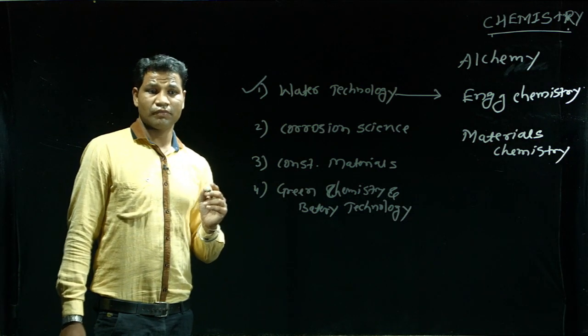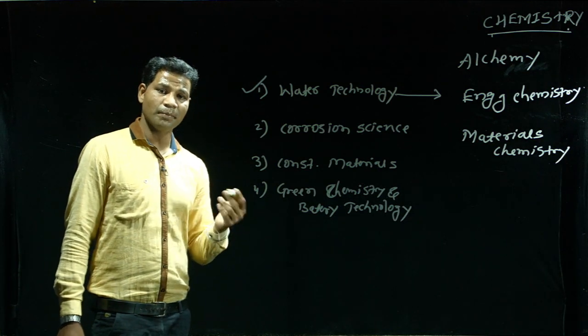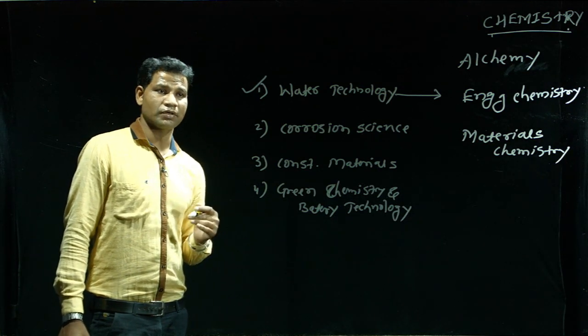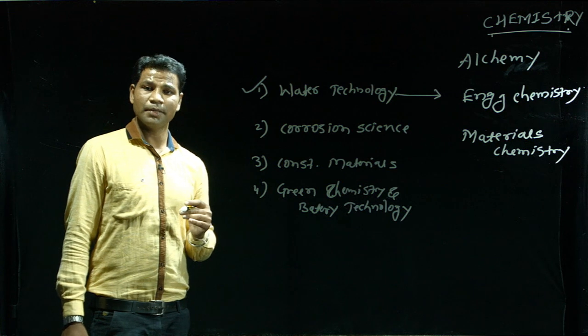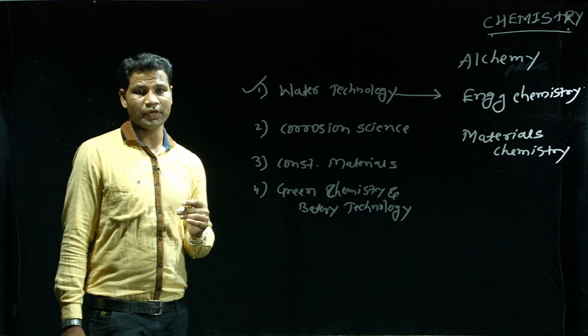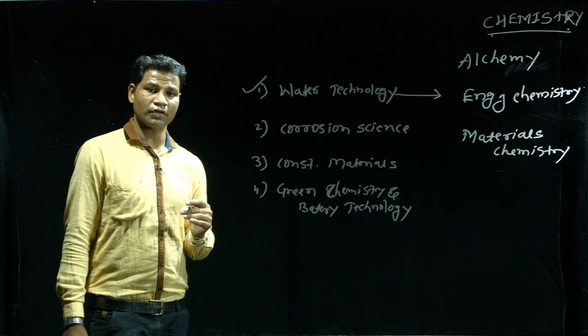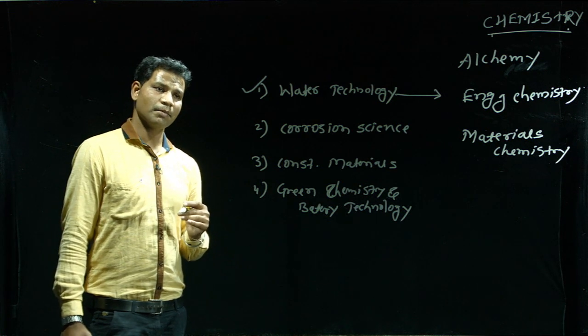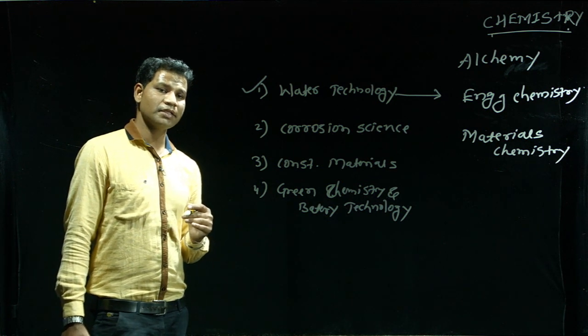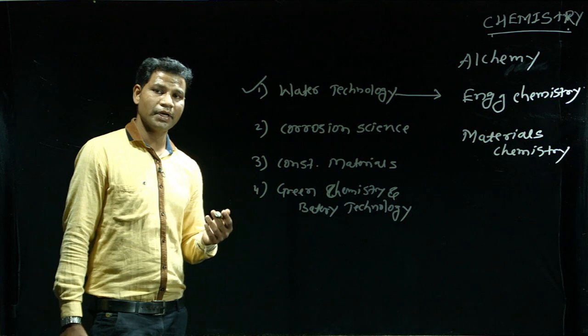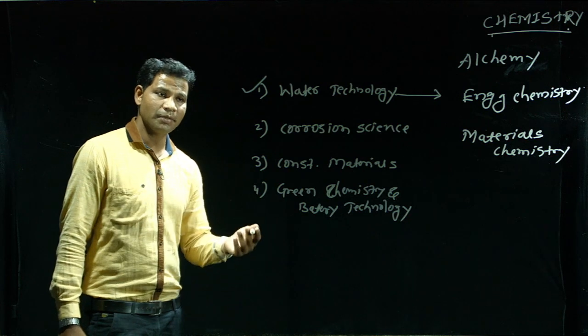There are various impurities present in water. There are three different types: first, biological impurities; second, colloidal impurities; third, dissolved impurities.